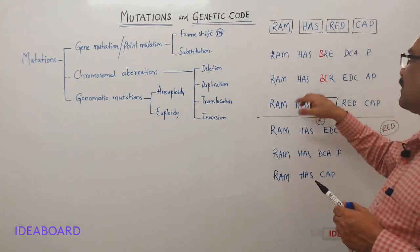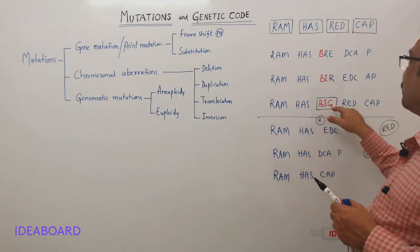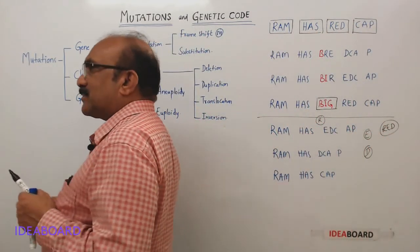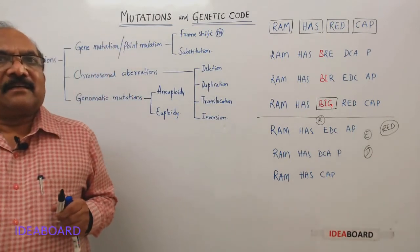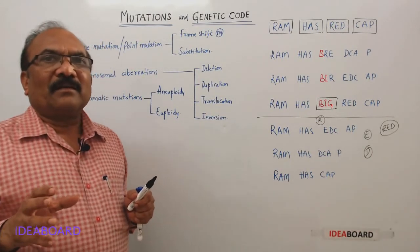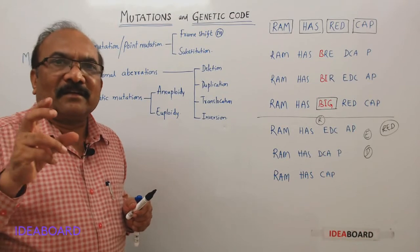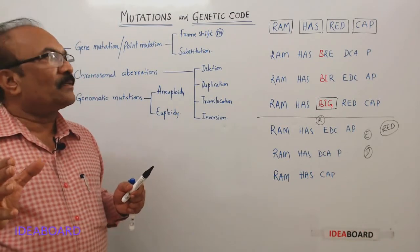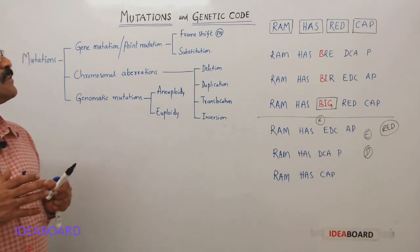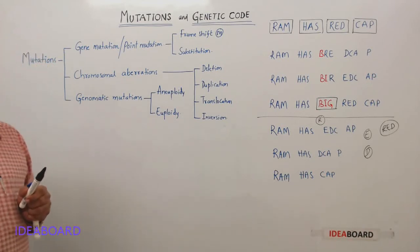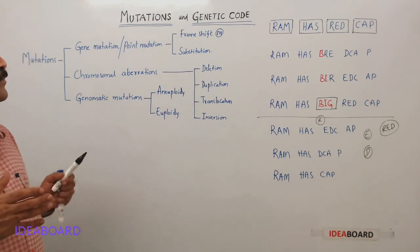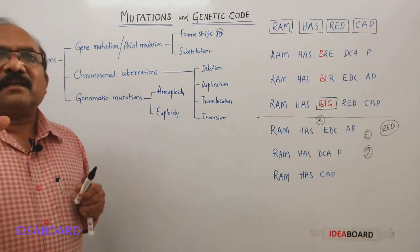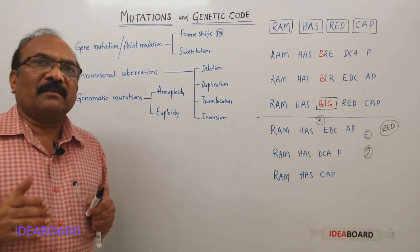So the original was 'RAM HAS RED CAP' but due to deletion it became 'RAM HAS CAP,' and due to addition it became 'RAM HAS BIG RED CAP.' From this we can understand that the genetic code is a triplet code. The best example for frame shift mutation that you have already studied is sickle cell anemia.